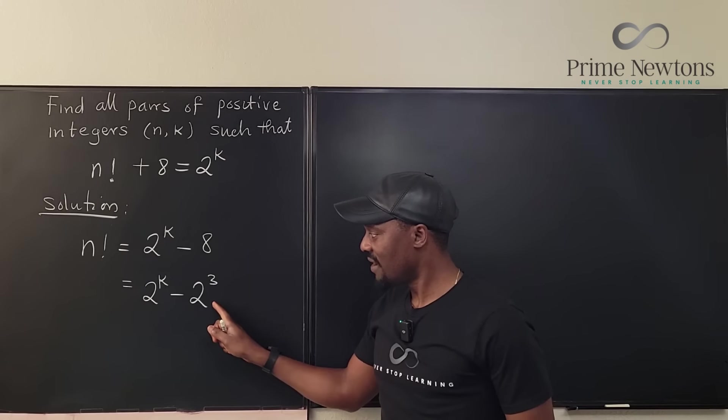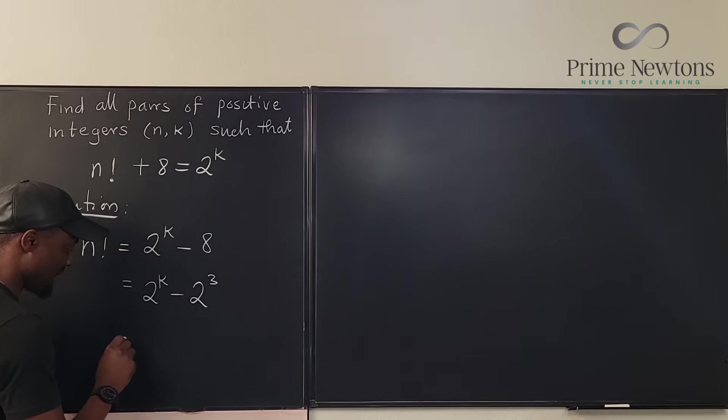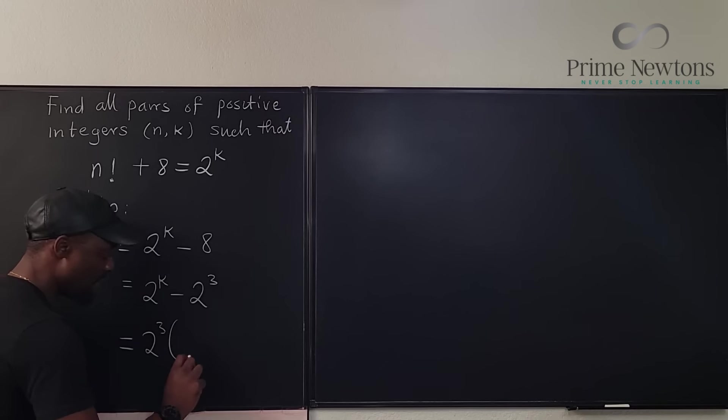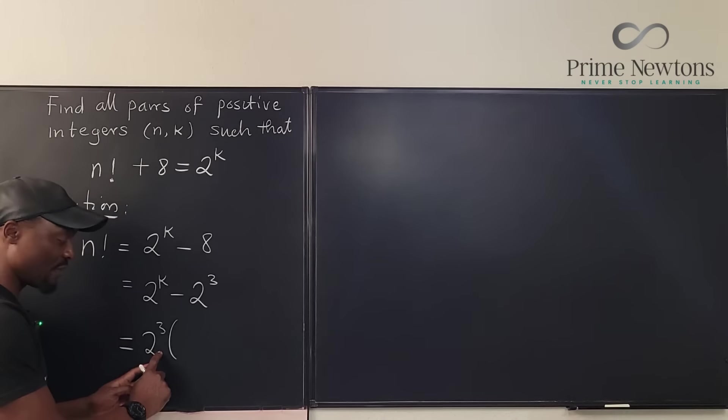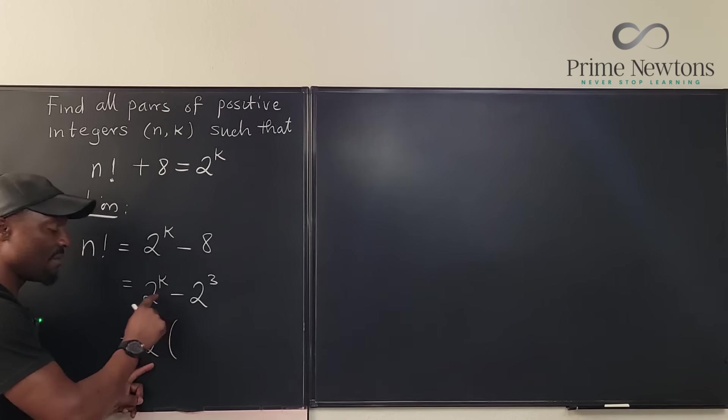If I factor out 2 to the third, this is going to be 2 to the third. Remember that factoring is the same thing as dividing. If I factor out 2 to the third, what I'm saying is I am dividing each term by 2 to the third.